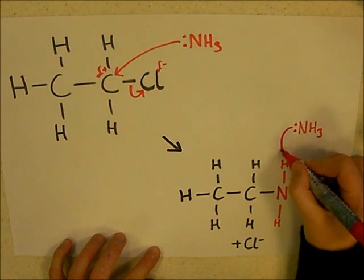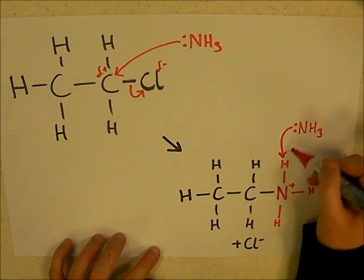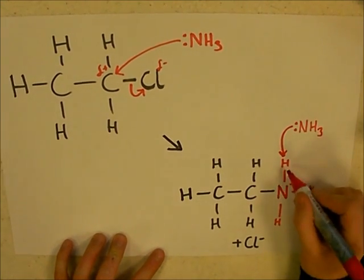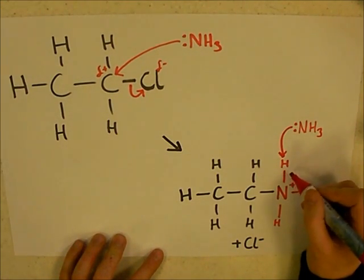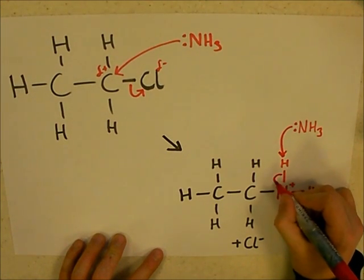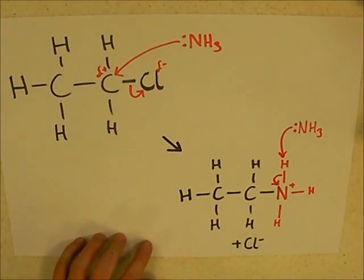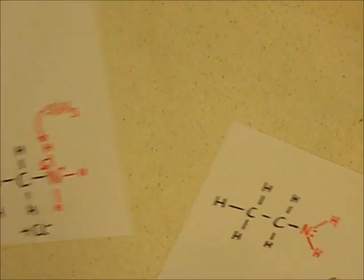So this attacks the hydrogen, forming a new bond between that nitrogen and that hydrogen with those two electrons. Now, this hydrogen doesn't need these two electrons because it's going to from here. So these two electrons jump onto the nitrogen to create this product here.